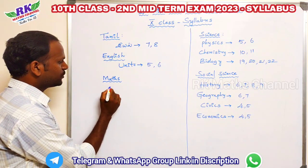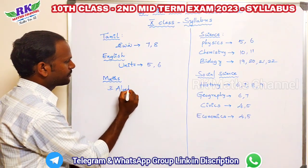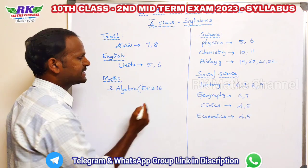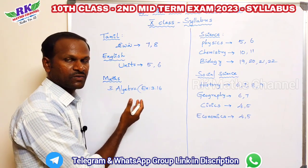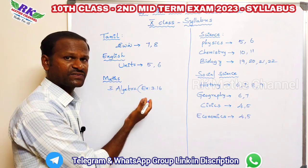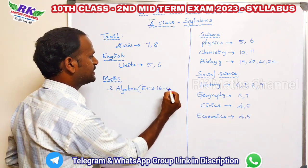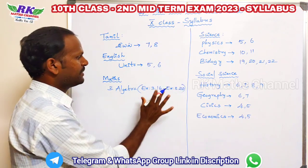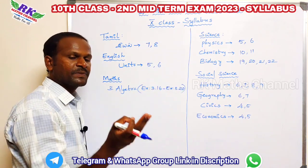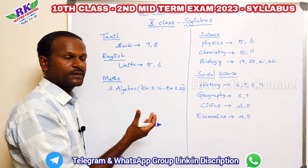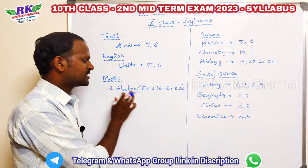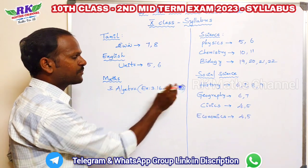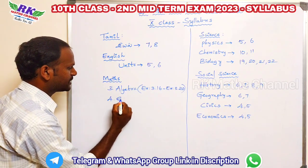For Math, the third unit is Algebra. In Algebra: quadratic equations and quadratic graphs — exercise 3.16 and exercise 3.20. Also, Matrix — the full third chapter. For the second term exam: exercise 3.16 and exercise 3.20.